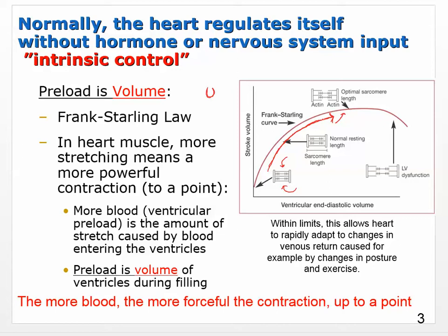The more blood that's in the heart, the stronger it has to contract to push a good portion of that blood out. But that's only true up to a point — at some point it gets so stretched out that it actually loses its contractile strength. This graph shows that more blood in the ventricle means a stronger contraction, but only up to a point. This is referred to as the Frank-Starling Law.